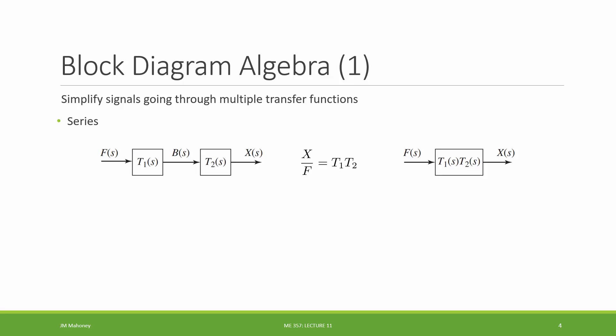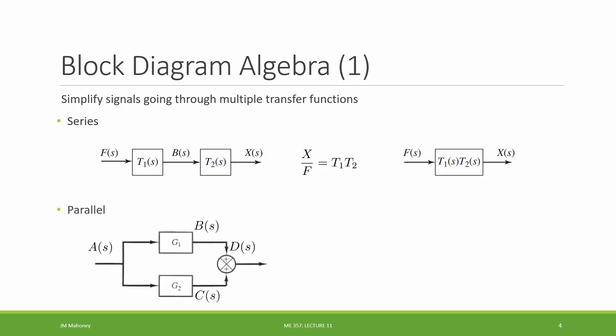Another way to connect transfer functions is in parallel. We have one signal a that branches: a goes into G1, coming out as b; a also goes into G2, coming out as c. Those outputs from G1 and G2 are then summed together. What we're looking for is the effective transfer function — what is output d related to input a when two transfer functions are in parallel and their outputs are summed?